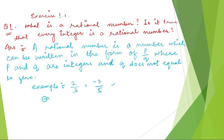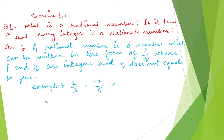What is not a rational number? Suppose I write 2 by 0 — here the denominator is equal to 0, so this is not a rational number. And if I write root 2 by 3, root 2 is not an integer. Since both P and Q must be integers, this is not a rational number.